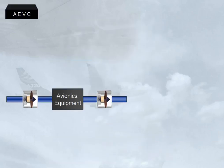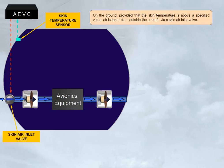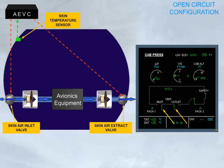On the ground, provided that the skin temperature is above a specified value, air is taken from outside the aircraft via a skin air inlet valve. The air is blown through the avionics equipment, extracted, and then discharged overboard via a skin air extract valve. As both valves are open, this is the open circuit configuration. Note: in most cases, you will see this indication when the aircraft is on the ground and engine not running, or engine thrust not at takeoff.